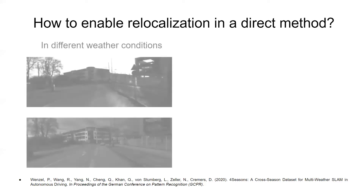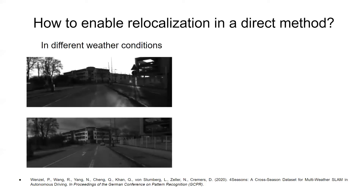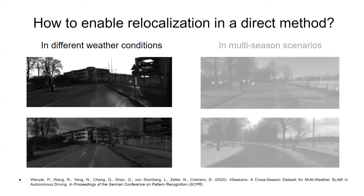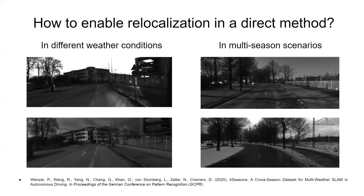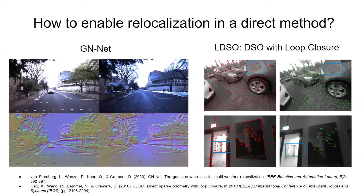As a SLAM task, relocalization poses a challenge in utilizing a map recorded during weather and seasonal conditions that differ from an odometry sequence. On this slide, we show two instances of such configurations. In comparison to indirect methods, which rely on repeatable and invariant local features for loop closure and relocalization, direct methods sample sparse points in image regions with sufficient gradient, and thus cannot guarantee any of the mentioned feature properties.